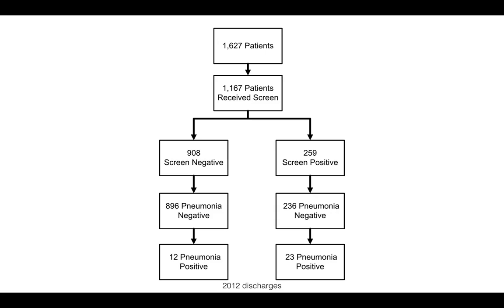Out of those who received the swallow screen, 908 were negative. Out of those, 896 did not have aspiration pneumonia and 12 did. We defined aspiration pneumonia as those charts that were coded for aspiration pneumonia during that visit — a methodology we use because it is an outcome and complication we track as part of our stroke program. Out of the 259 screen positives, 236 were pneumonia negative and 23 were pneumonia positive when we reviewed their charts.